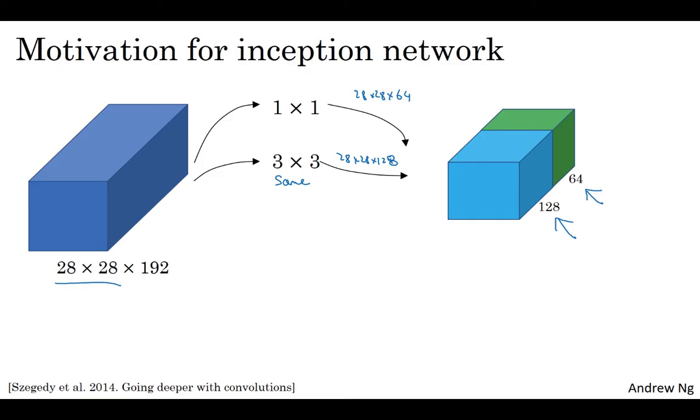And maybe you might say, well, I want to hedge my bets. Maybe a 5x5 filter works better. So let's do that too, and have that output a 28 by 28 by 32. Again, you use the same convolution to keep the dimensions the same.